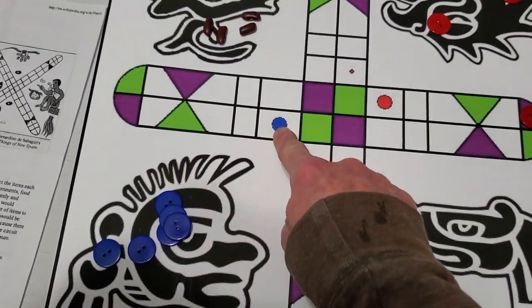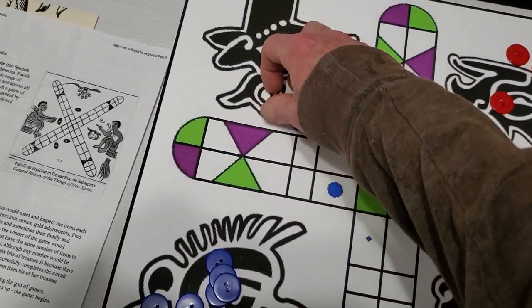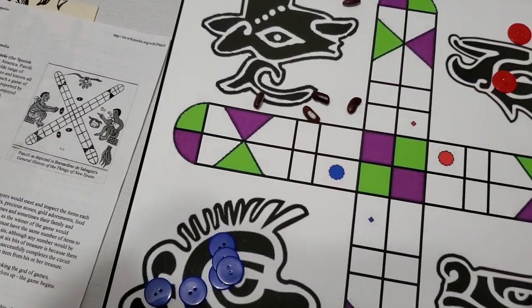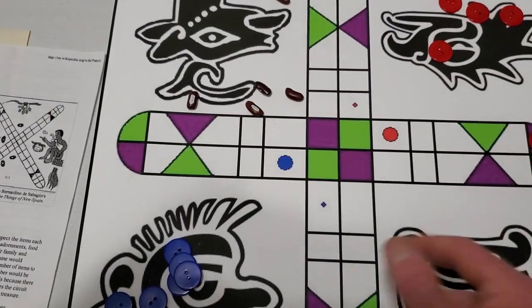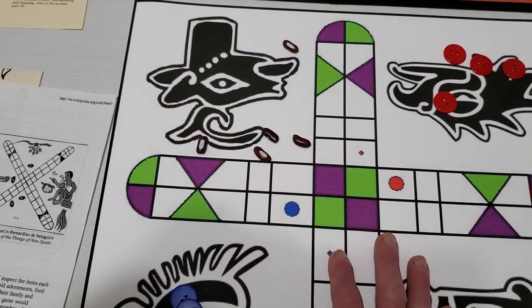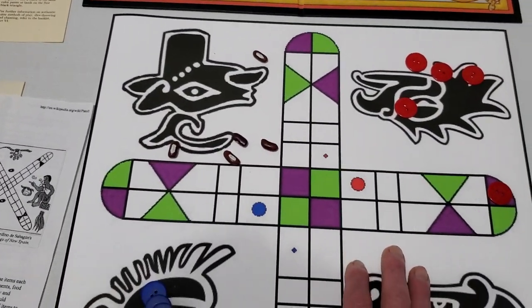You start with one guy on here, but you always need to get a one to bring another guy on. So you'd roll, and if you can't make a move then you'll lose a coin or lose a treasure. The way we do it, we have to keep giving to the kitty.